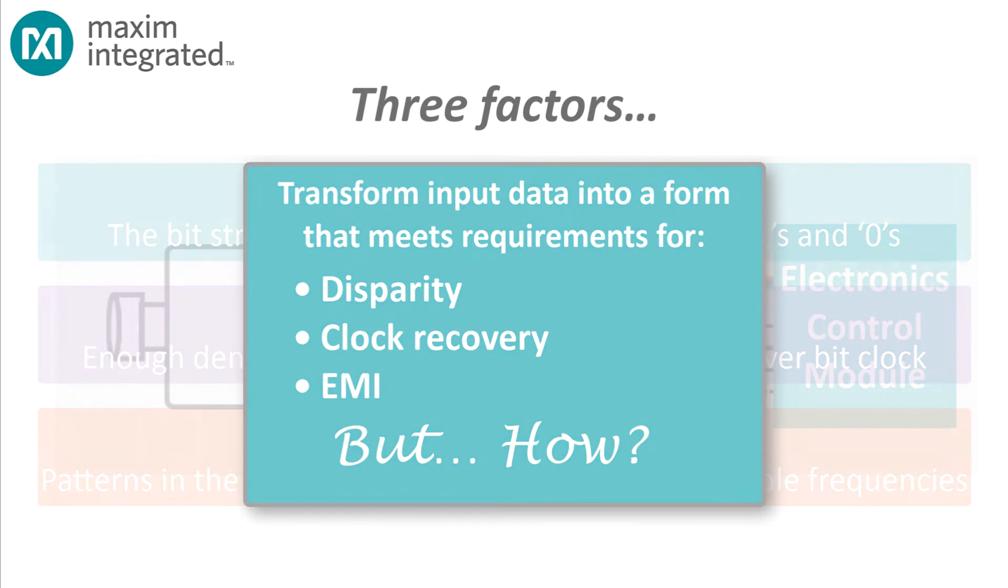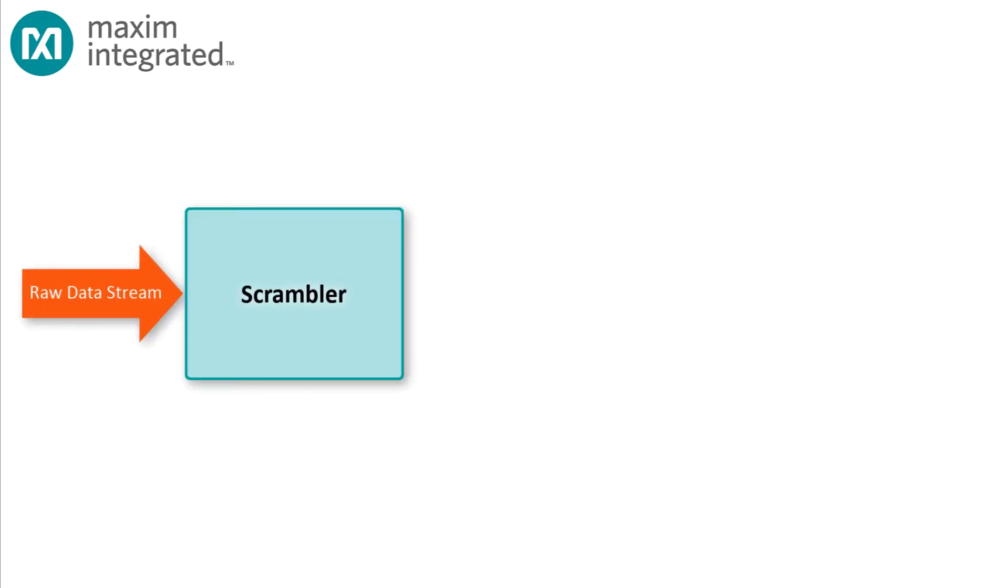The answer involves two steps. First, we scramble the data using an algorithm known to both the serializer and the deserializer. Scrambling breaks up any patterns in the data that might lead to the generation of subharmonics.